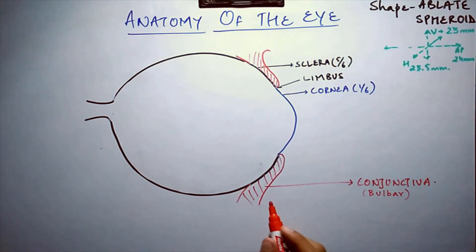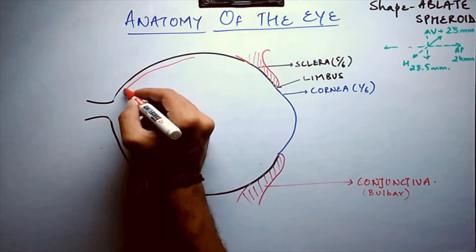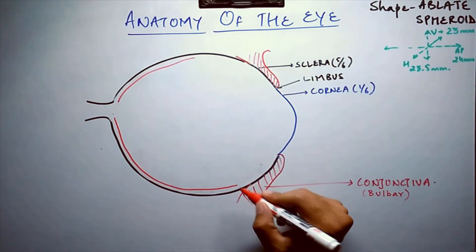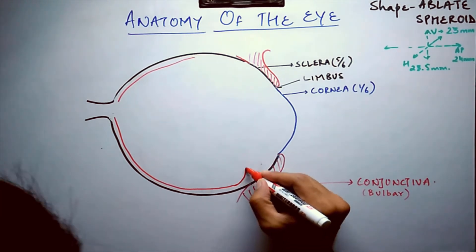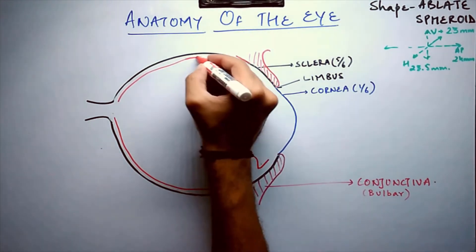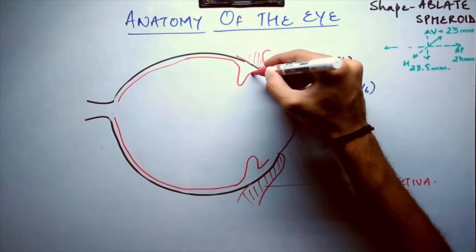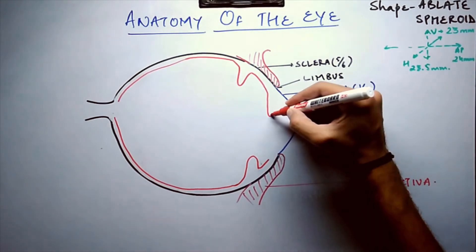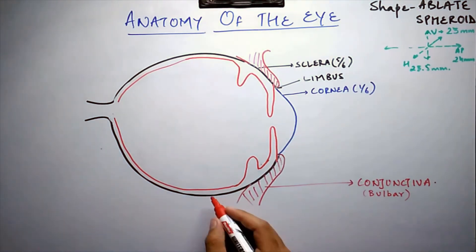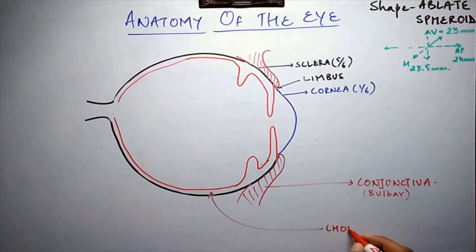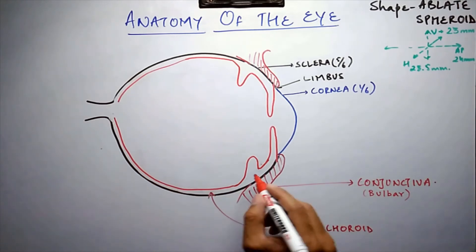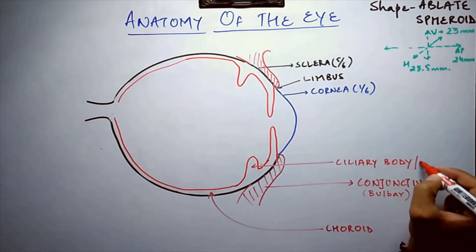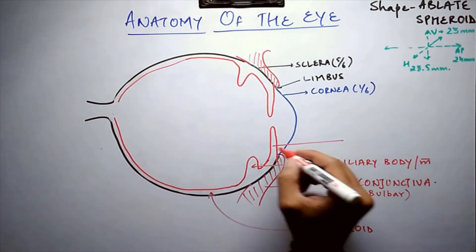The next layer, inner to the sclera, is the coloured layer. It extends anteriorly and forms a muscular part, and also produces the visible colour of the eye. This layer is called the choroid. The muscular part of this layer is called the ciliary body or ciliary muscles, and the visible part seen as the eye colour is the iris.